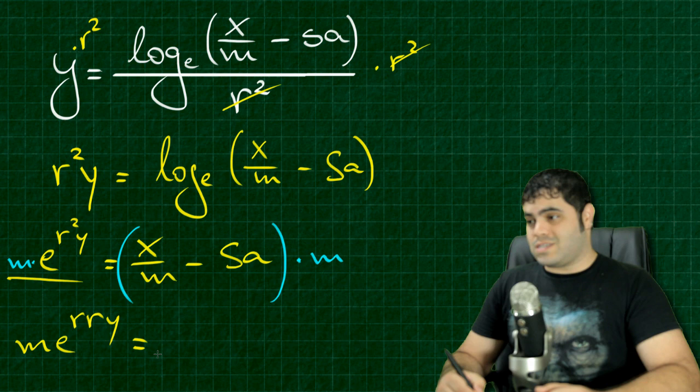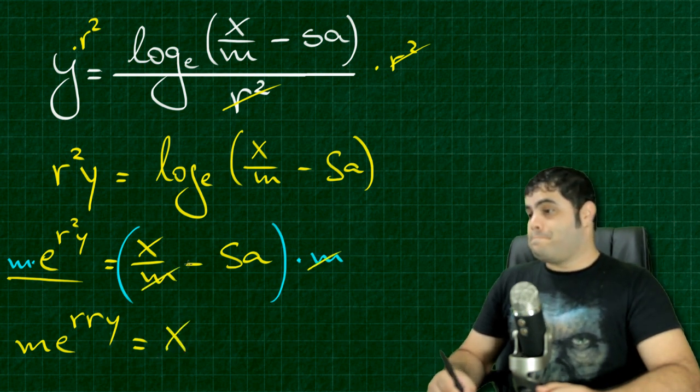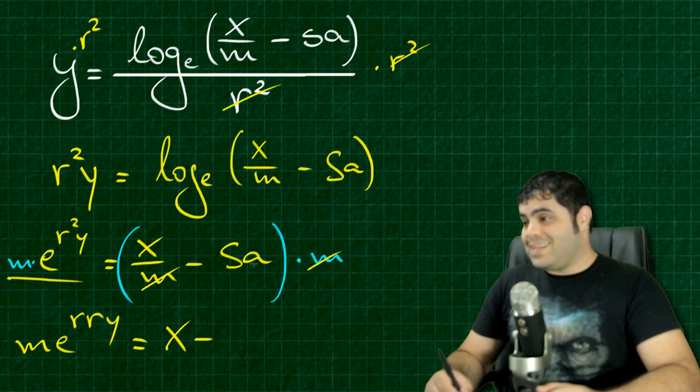M I simplify with this M right over here. So X minus S times A times M, so S times A times M.